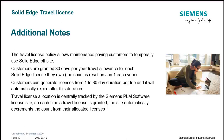Some additional notes on travel licenses: the travel license policy allows maintenance-paying customers to temporarily use Solid Edge off-site, whether traveling or working at home. Customers are typically granted 30 days per year of travel allowance for each Solid Edge license they own, and the count resets on January 1st of each calendar year. Customers can generate licenses from 1 to 30 days duration per trip, and they automatically expire after that duration. These travel licenses are tracked by Siemens PLM Software license site, so each time a license is granted, the site automatically decrements the count from the allocated licenses.